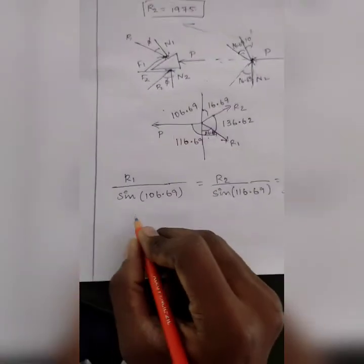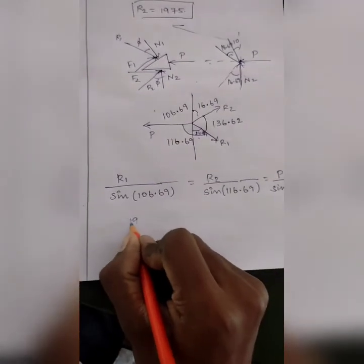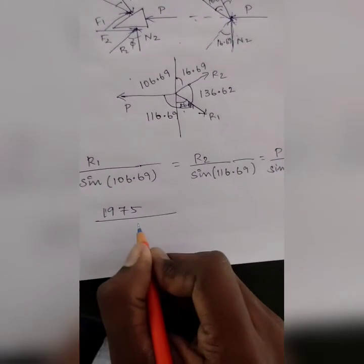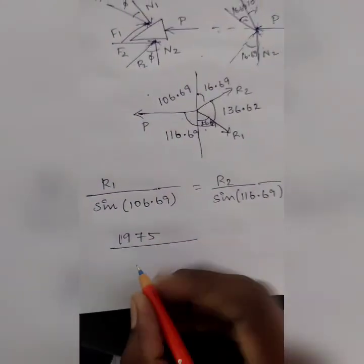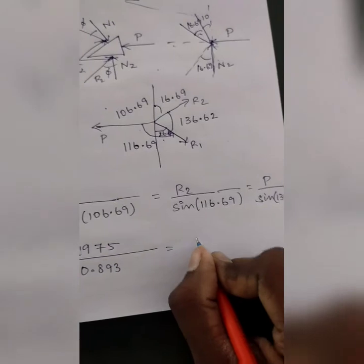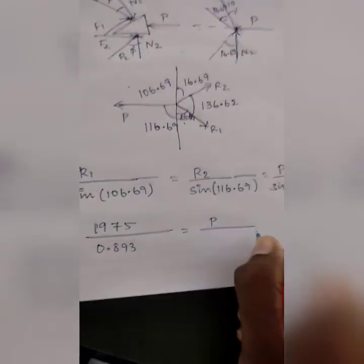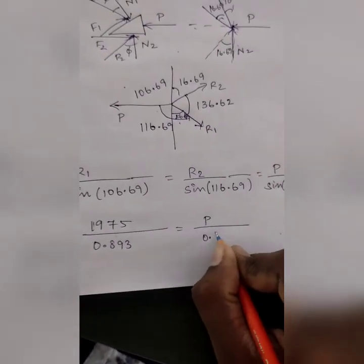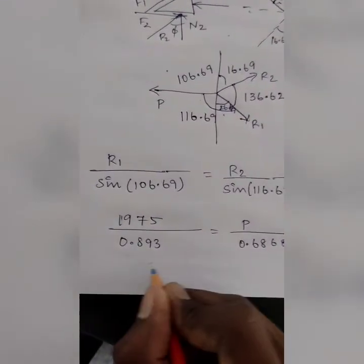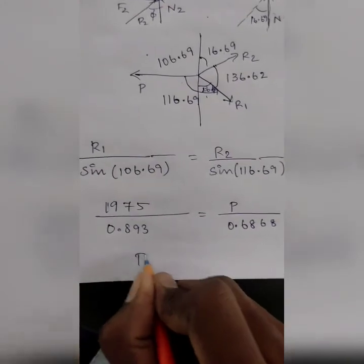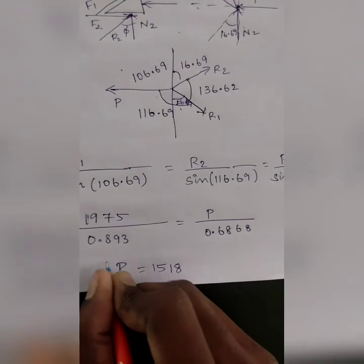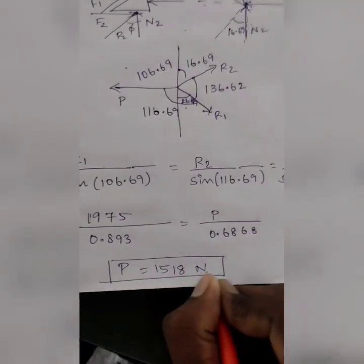R2, which is 1975, divided by 0.893, which is equal to P by 0.6868. P is 1518 Newton. That is what we get.